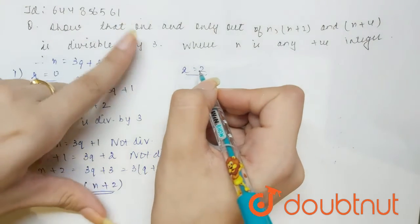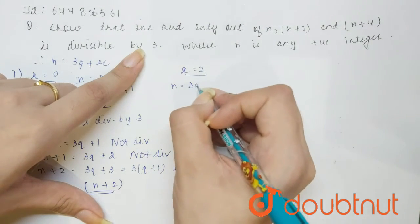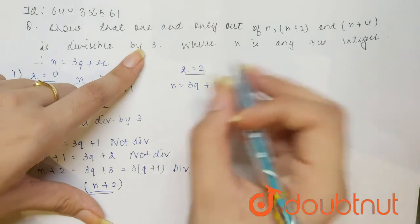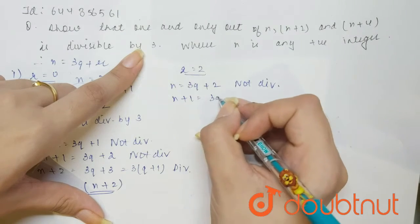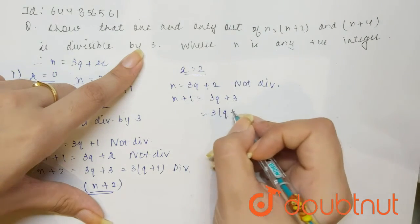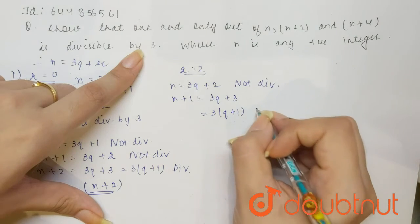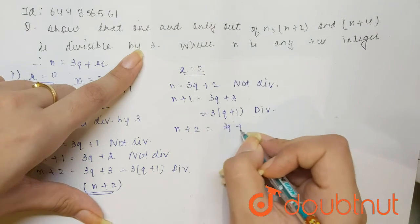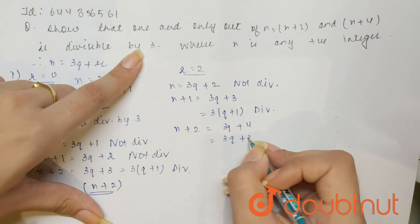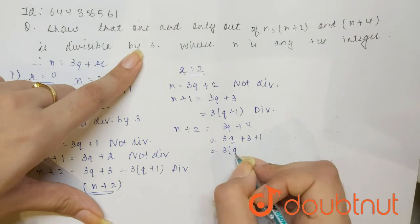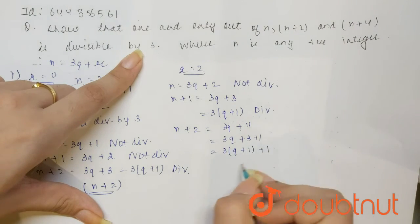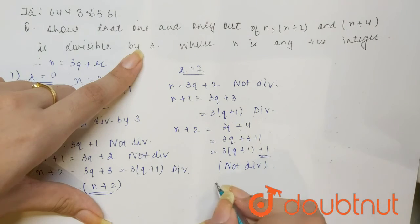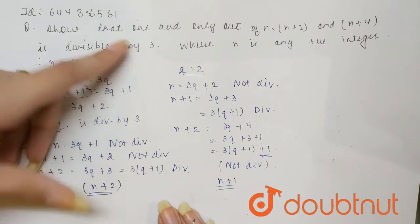Now consider the third case when r is equal to 2. Then n will be 3q plus 2, which is not divisible by 3. Now n plus 1 will be 3q plus 3, which we can write as 3 into (q plus 1), so this is always divisible by 3. Now n plus 2 will be 3q plus 4, or 3q plus 3 plus 1, which equals 3 into (q plus 1) plus 1. So when divided by 3, it leaves remainder 1, meaning this is not divisible by 3. So here only n plus 1 is divisible by 3.